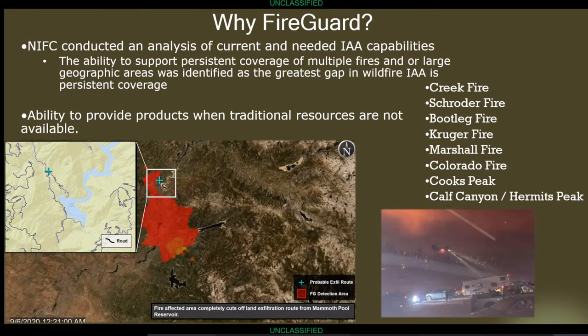Some highlighted fires we've supported over the past few years: the Creek Fire — FireGuard was instrumental in helping pilots navigate in to rescue the 200 civilians that were surrounded and trapped at Mammoth Pools. On the Marshall Fire and some other fires, it was the only piece of information we had because wind and atmospheric conditions had grounded all aircraft. FireGuard was really the only piece of intelligence that firefighters on the ground had.